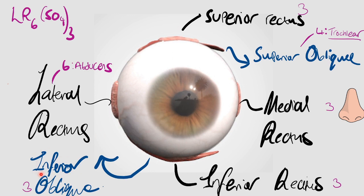Your inferior oblique, which also lifts the eyeball, is not working either, so nothing is lifting the eye upwards. Your medial rectus is also not working because it's innervated by your third nerve, so your eye isn't being pulled inwards. Instead, there will be unopposed action of your lateral rectus (nerve 6), because at rest all muscles work together to keep your eye central. But if the medial rectus isn't working, the lateral rectus will be unopposed, so your eyeball wanders outwards - so it's down and out.